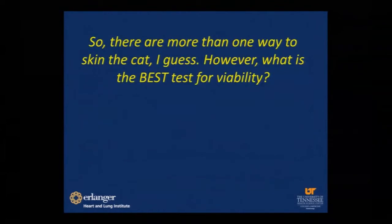There are other methods to assess cardiac viability, including echocardiographic perfusion imaging — which was a big deal in the early 2000s — strain imaging, different radiotracers being studied, and CT imaging, which is widely available. There are many ways to assess viability, but currently the methods most commonly used are those we've discussed.